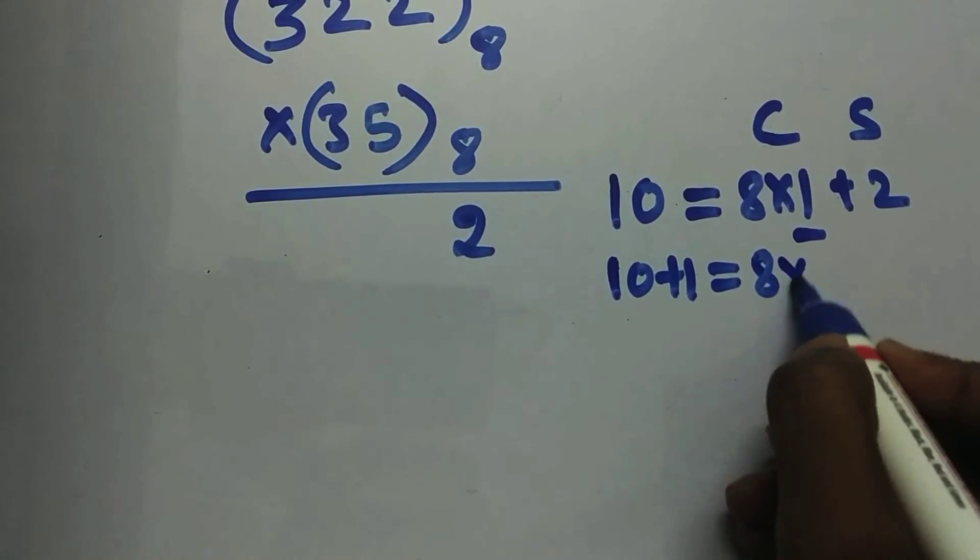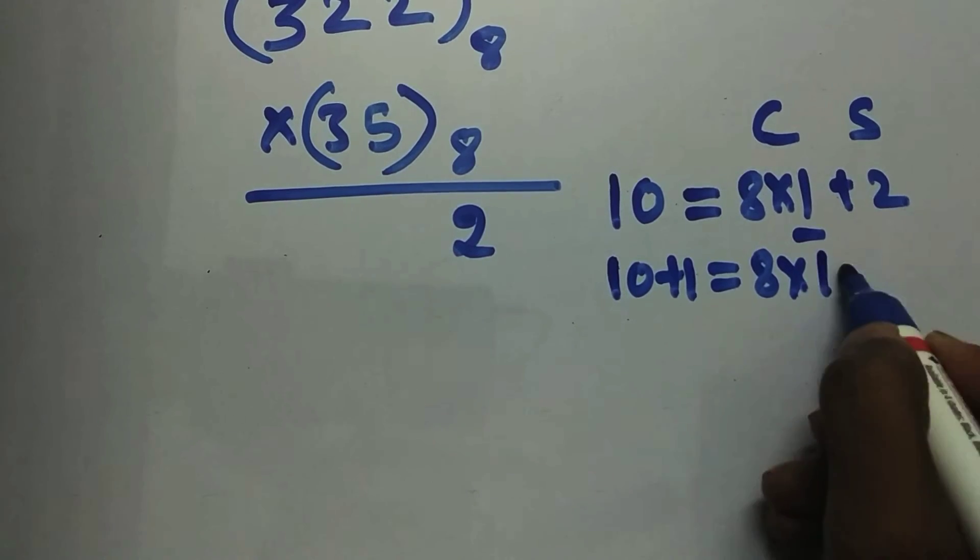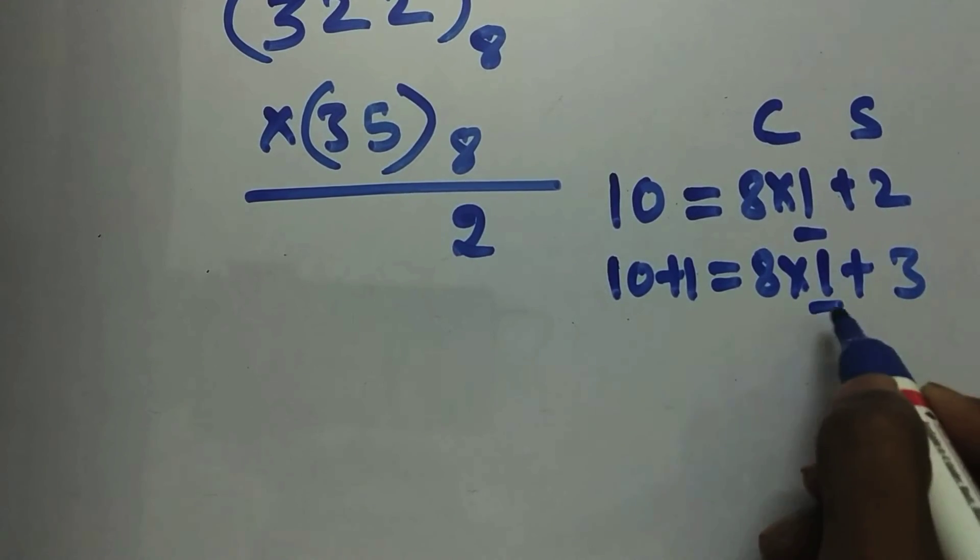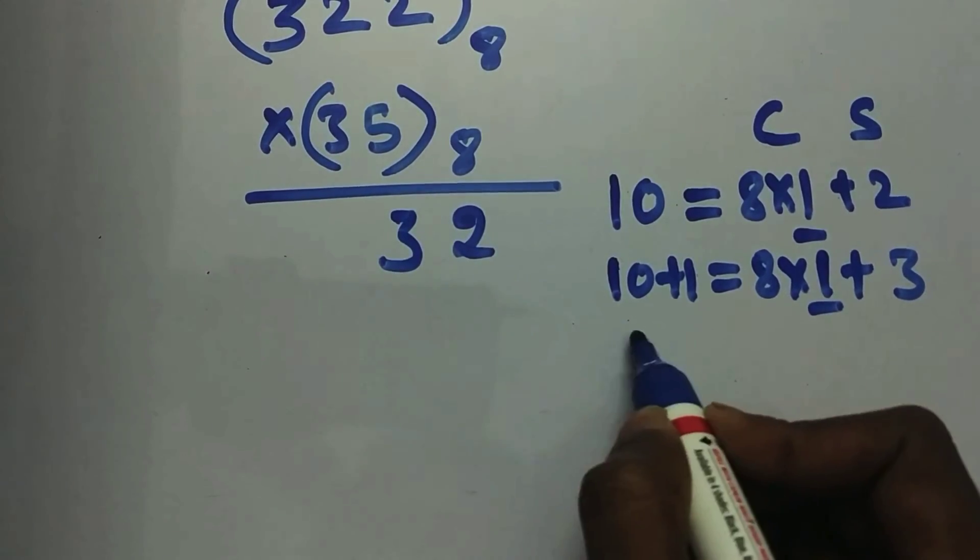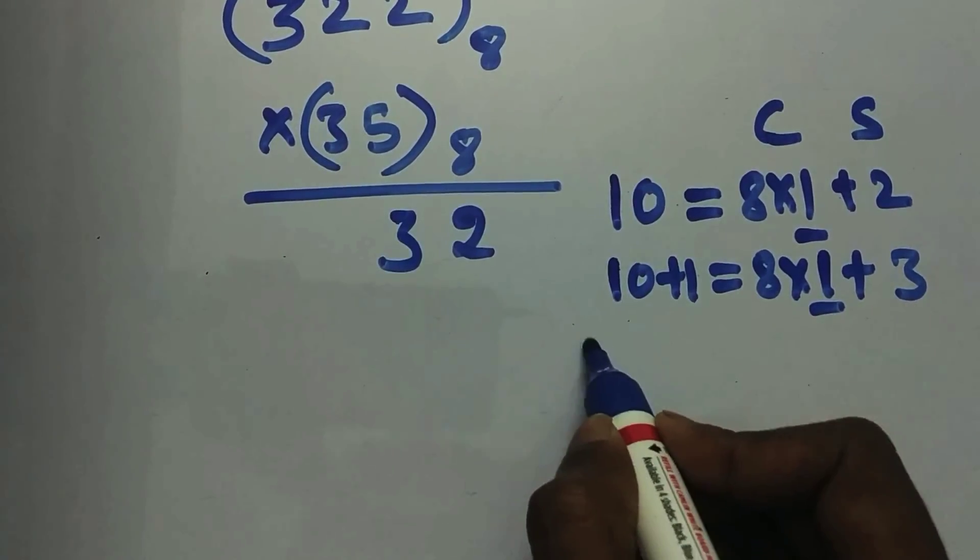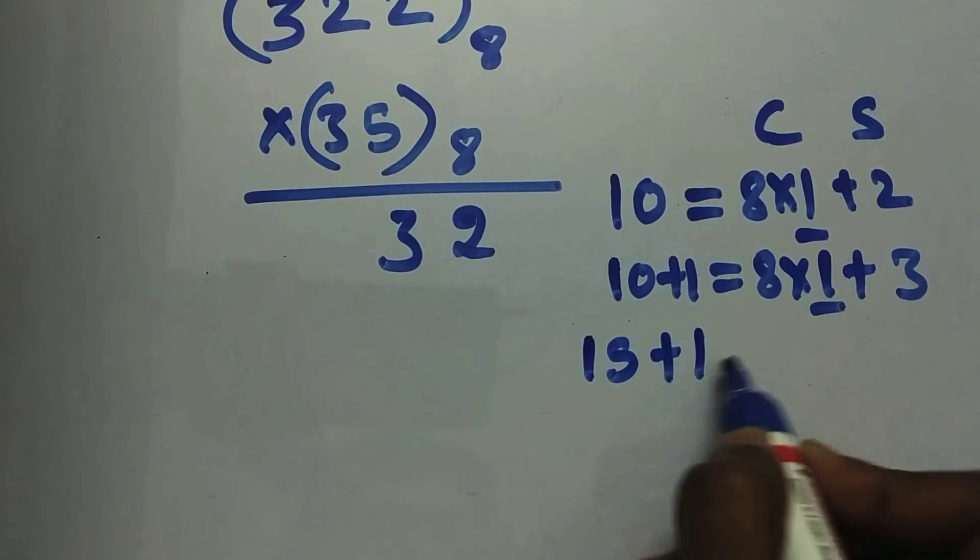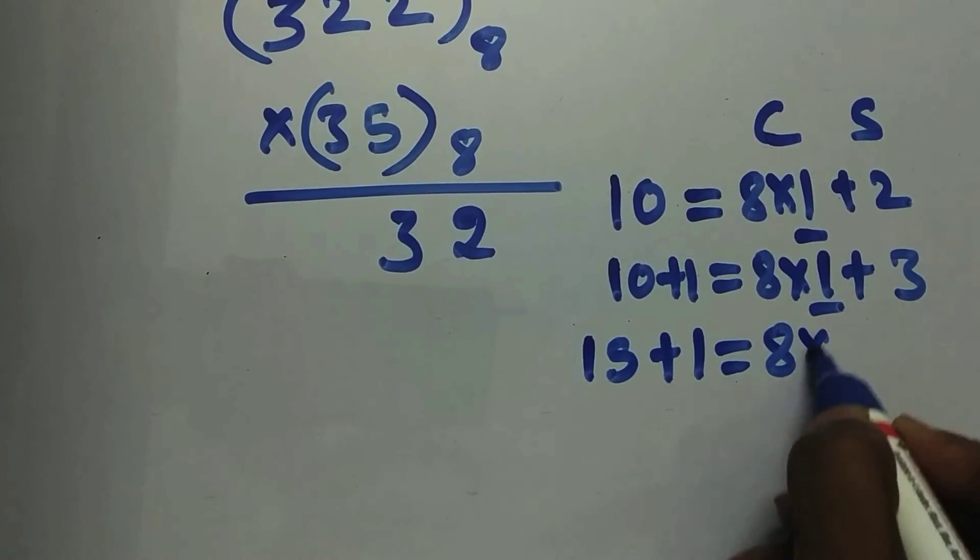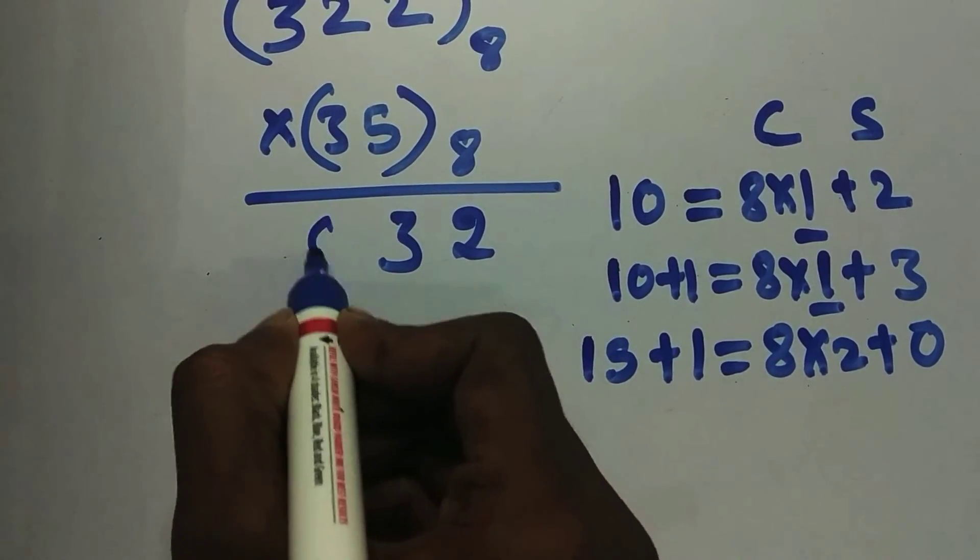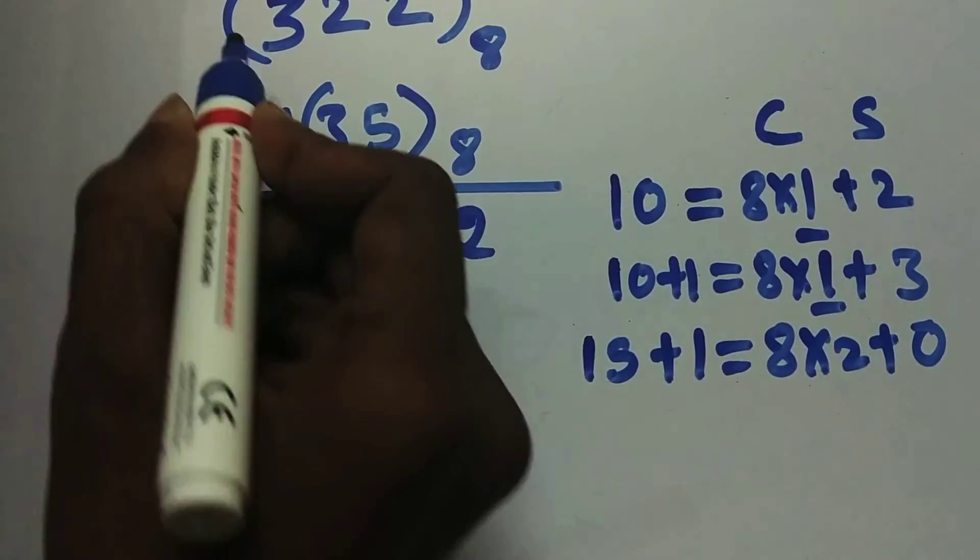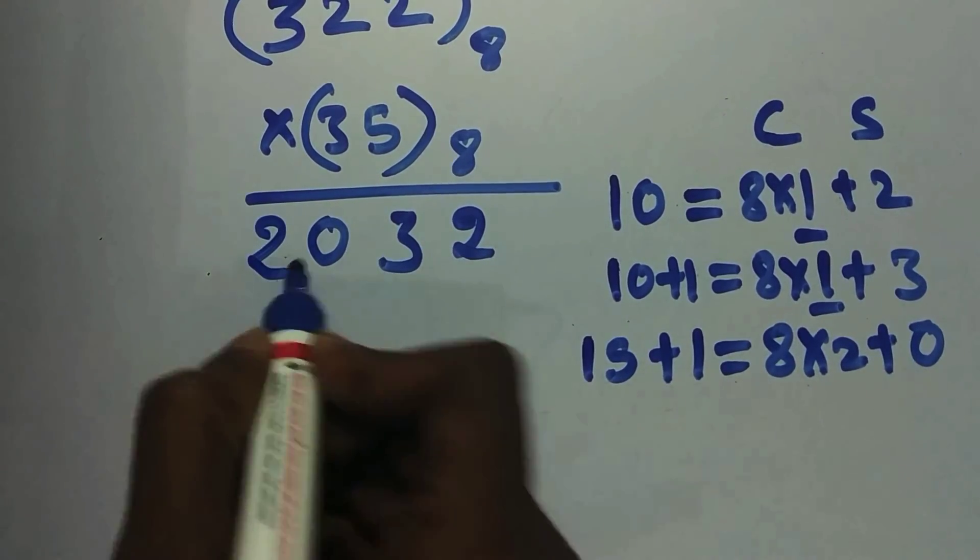So convert 11 into octal, so 8 into 1 plus 3. So carry will be added for the next, so write the sum over here. So it's 3 and 2. Now it's 5 into 3, 15 plus 1 is 16. So 8 into 2 plus 0. So you got 0 over here since no other bit is there. So 2032 is the result for 5.